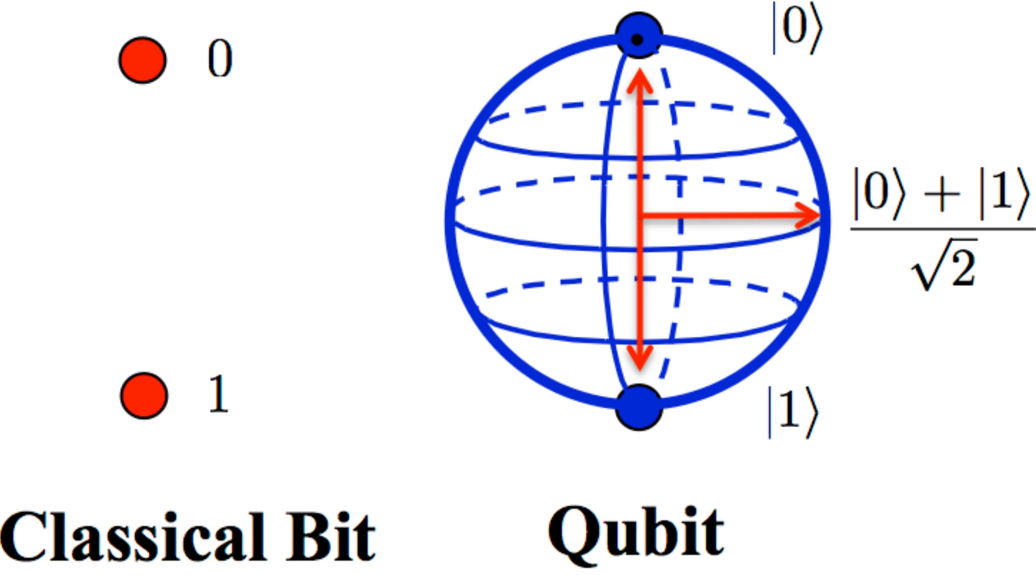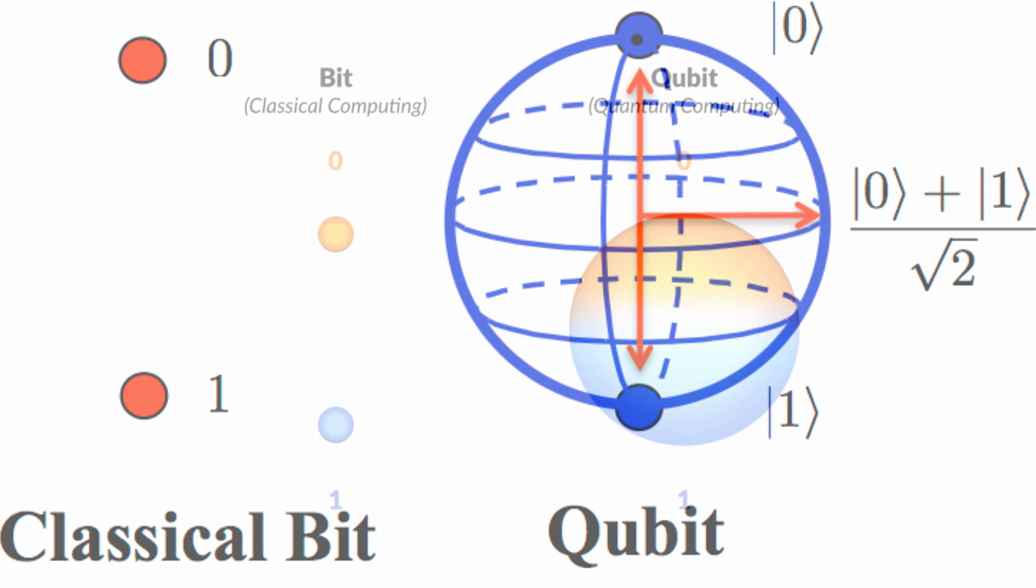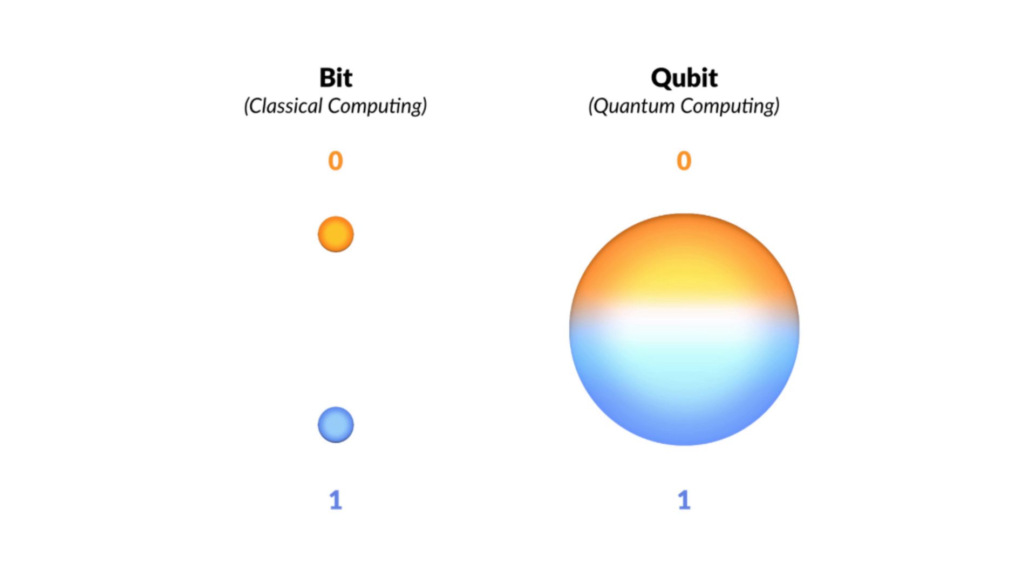Qubits can represent a 0 and 1 or a superposition of both. This means that a qubit can exist in multiple states simultaneously, which is the key feature that makes quantum computers so powerful.